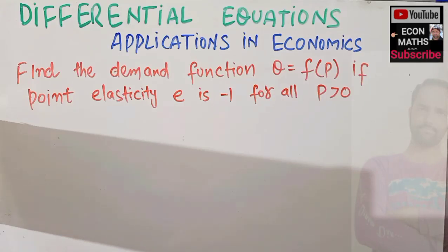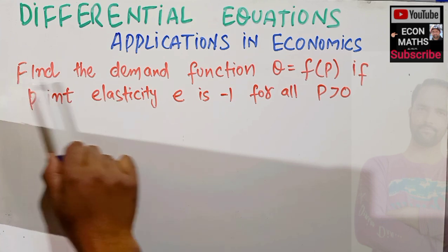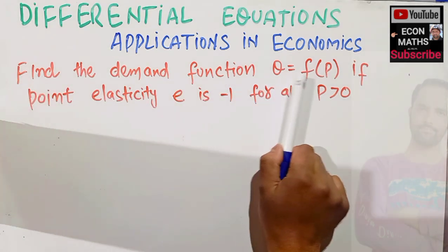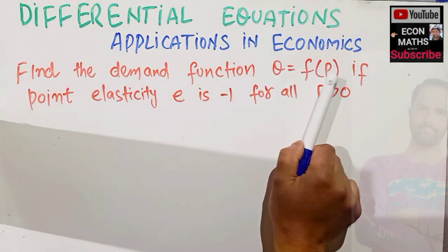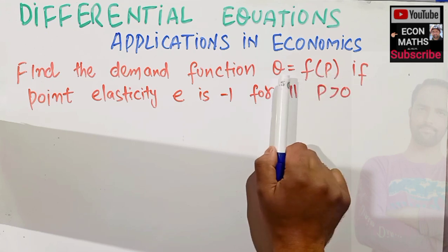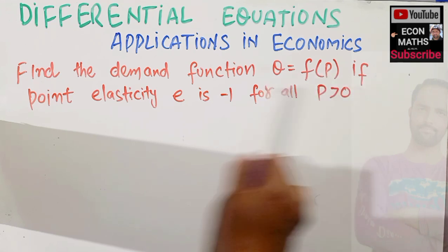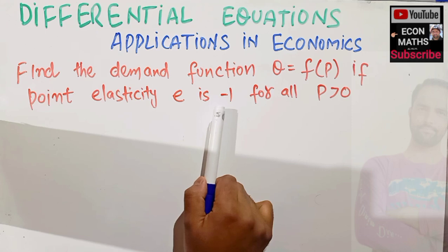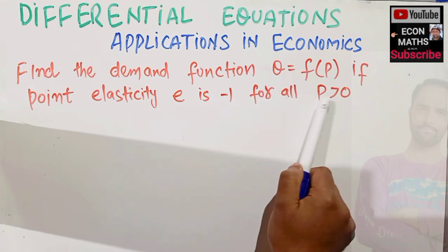In this video we will learn about the applications of differential equations in economics. The question is to find the demand function Q equals f of P, where Q is the output and P denotes the price. That means output is a function of price. If point elasticity e is given as negative one for all price greater than zero, we have to construct the demand function.